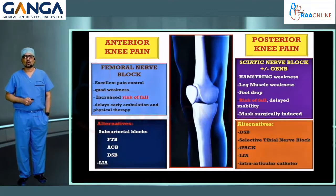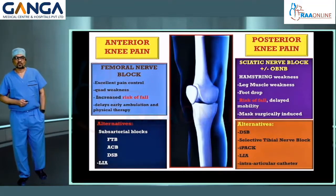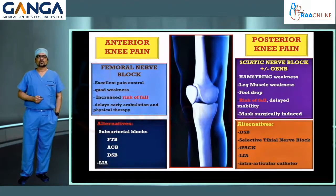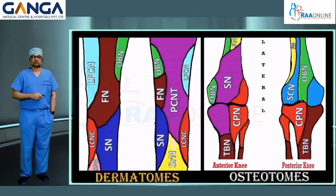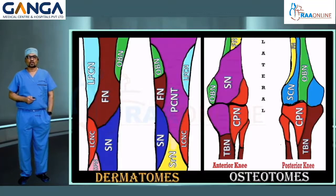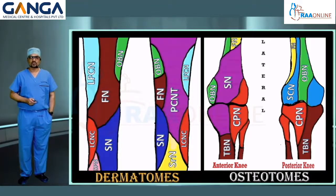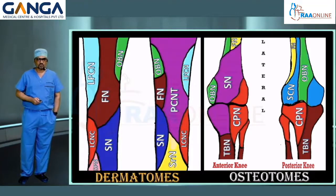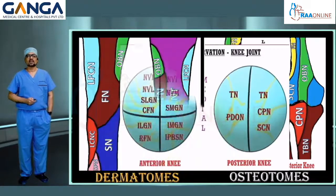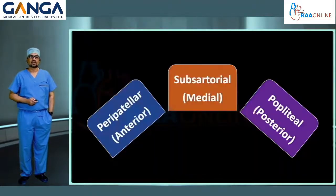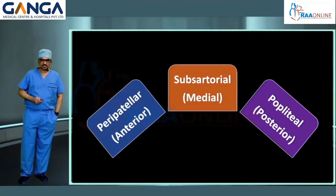Before we begin, we should know the purpose of each block — whether they are providing analgesia for the anterior knee, posterior knee, or both. For that, knowledge of the complex innervation of the knee joint is very important. These innervations include innervations of dermatomes, osteotomes, myotomes, and anterior and posterior capsules.